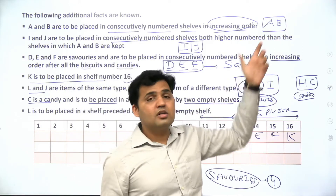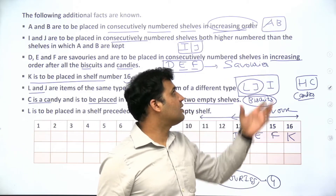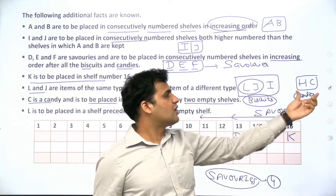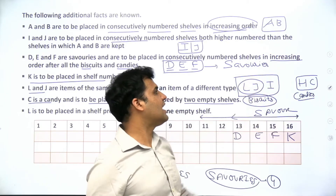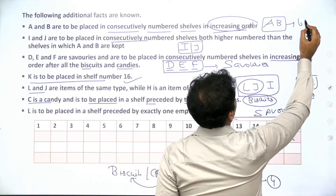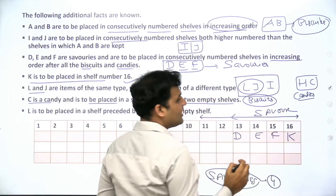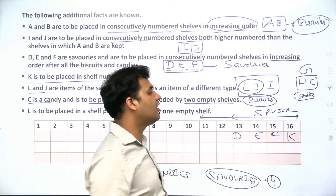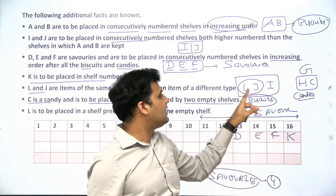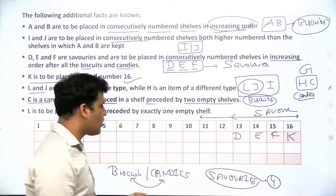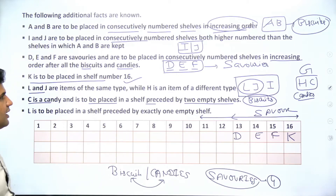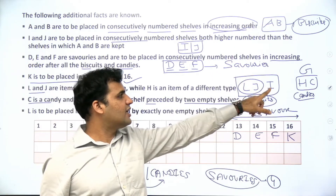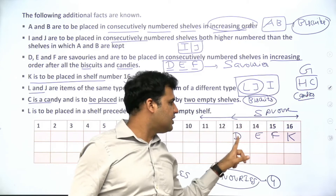A and B are the same type. We already have H and C as candies — two of the three total candies. If A and B were candies, total candies would become four, which is not possible. So A and B must also be biscuits. That leaves G as the only remaining item, so G must be the third candy. Summary: biscuits are A, B, I, J, L; candies are C, G, H; savouries are D, E, F, K.